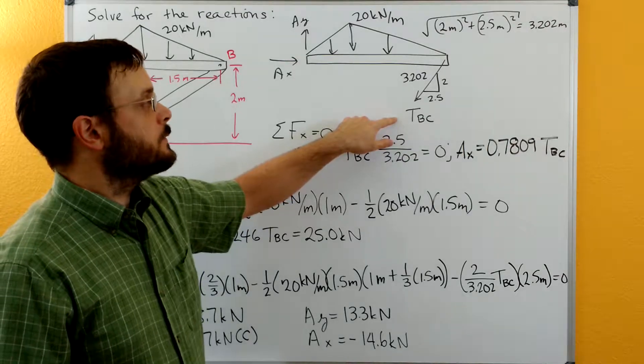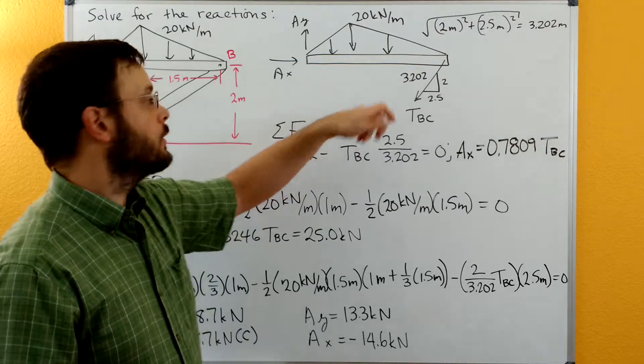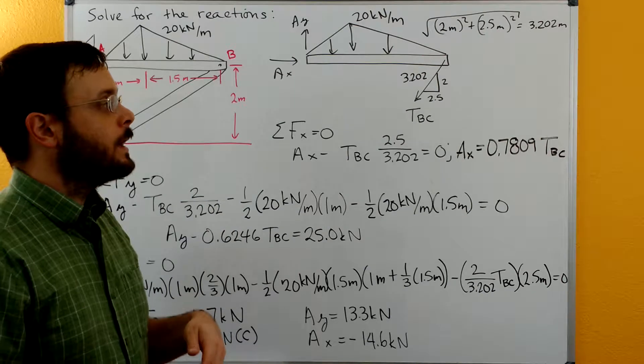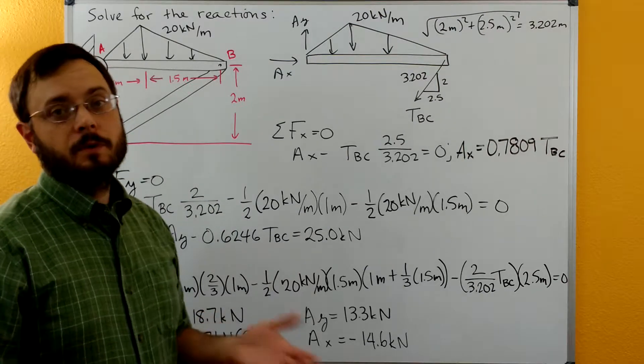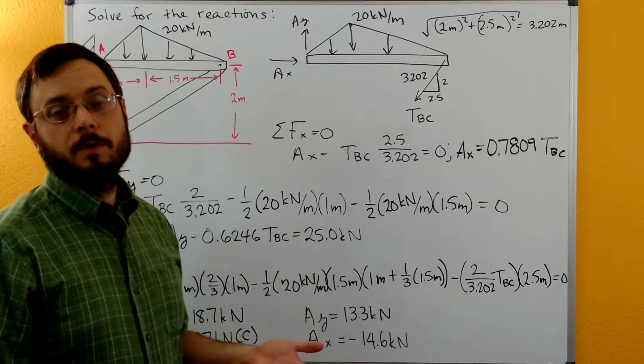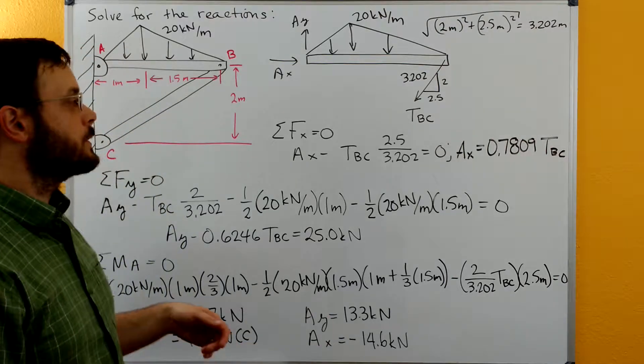I drew TBC as if it was in tension, as if it was pulling on the end at B, and we'll just see if we get a positive number. If we do then it's in tension, if we get a negative number then it's in compression.